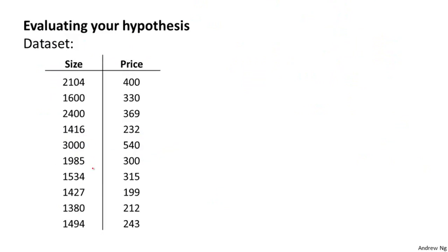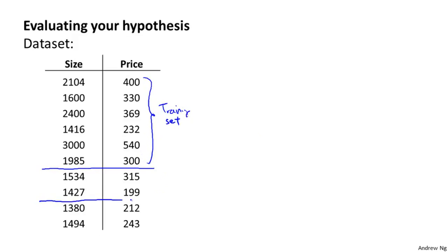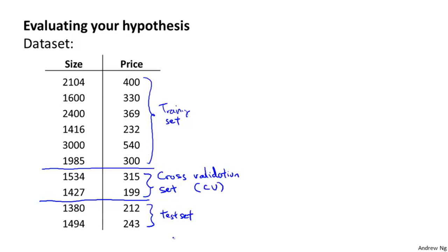To address this problem in a model selection setting, instead of splitting data into just a training set and test set, we split it into three pieces. The first piece is the training set. The second piece is called the cross validation set, abbreviated CV — sometimes also called the validation set. The third piece is the test set. A typical ratio is 60% training, 20% cross validation, and 20% test.